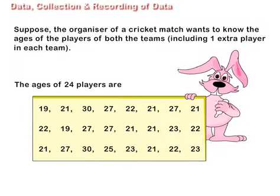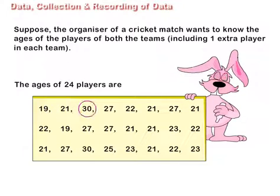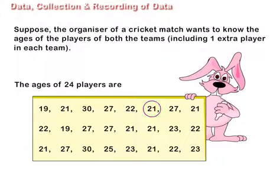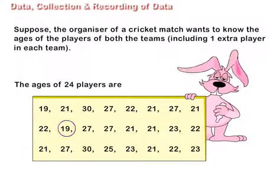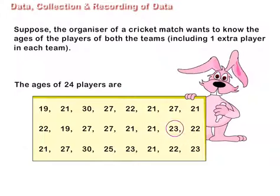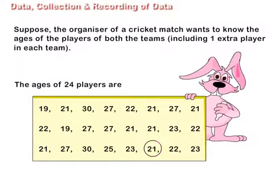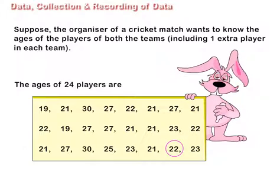The ages of 24 players are: 19, 21, 30, 27, 22, 21, 22, 21, 27, 21, 23, 22, 21, 27, 30, 25, 23, 21, 22, 21, 27, 30, 25, 23.